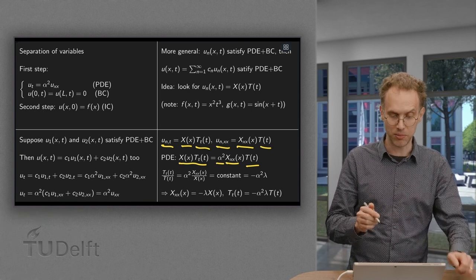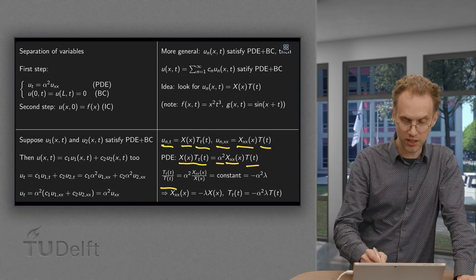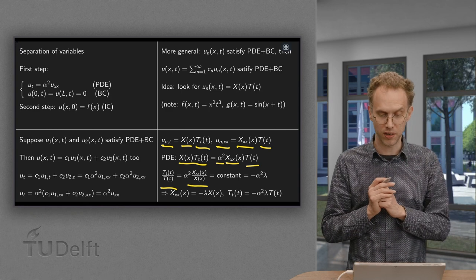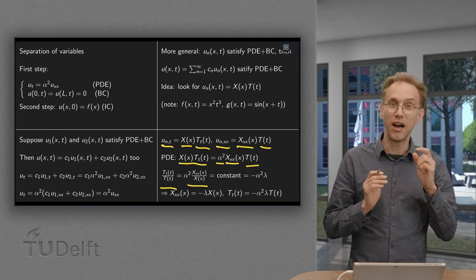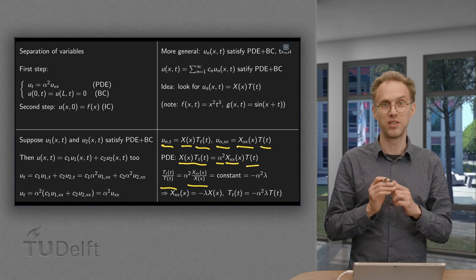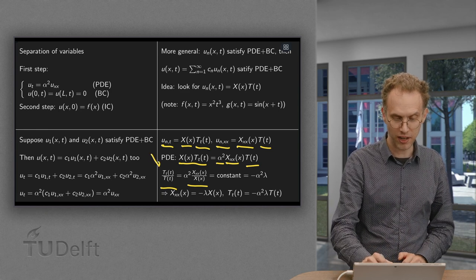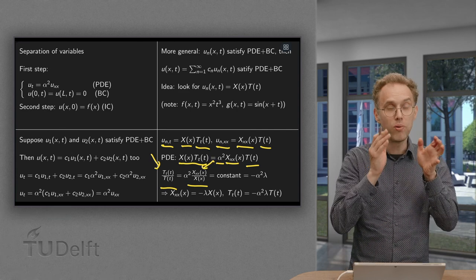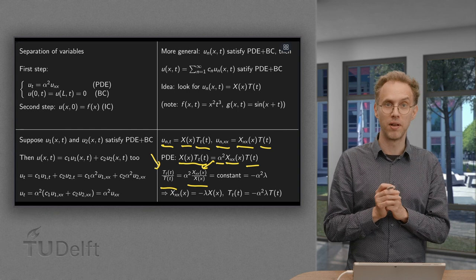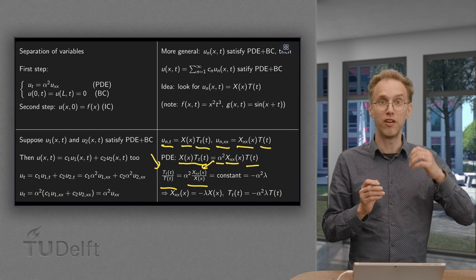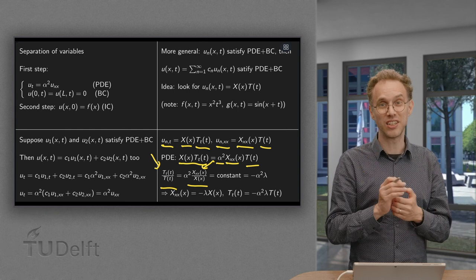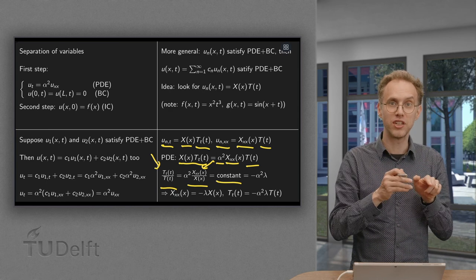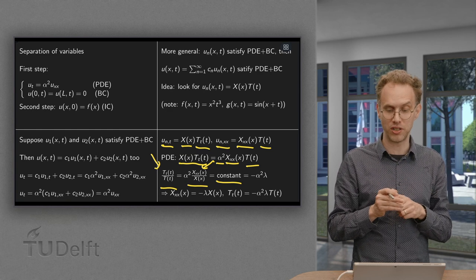Then we divide by X times T. You get TT over T equals alpha squared X66 divided by X. And now something very important happens. This left hand side over here only depends on time. This right hand side here only depends on X and not on time. That is only possible if both the left hand side and the right hand side are in fact constant. So TT over T is constant and X66 over X is also constant.